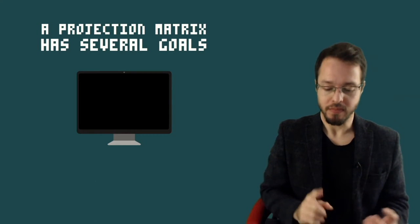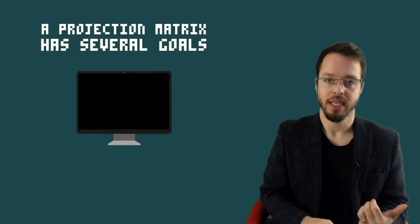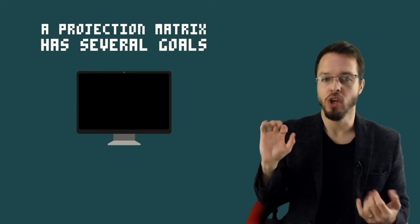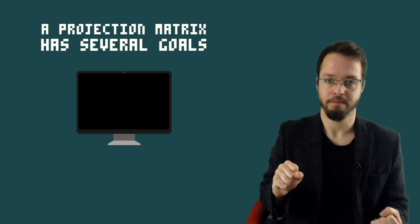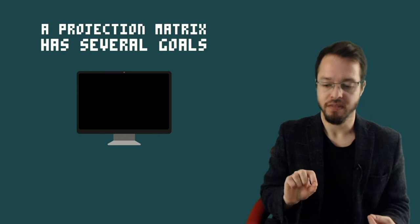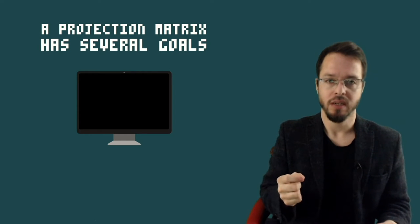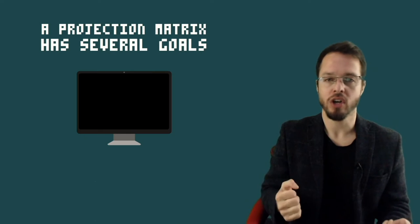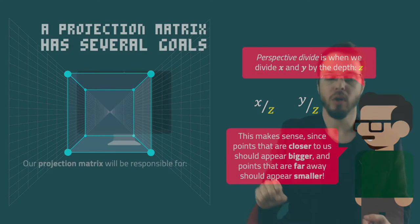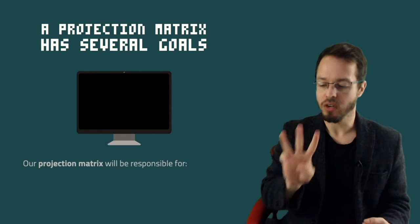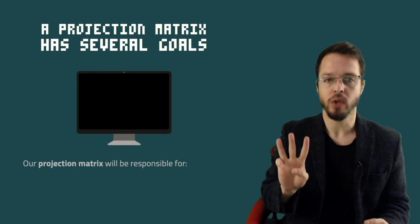I'm going to tell you something. The perspective projection matrix has several different goals, several objectives that we can achieve. So far, the perspective we have been achieving is what we call weak projection, which doesn't take into account anything else other than perspective divide. We need to take into account that a projection matrix is responsible for three important things — three steps that the projection matrix is going to help us achieve.